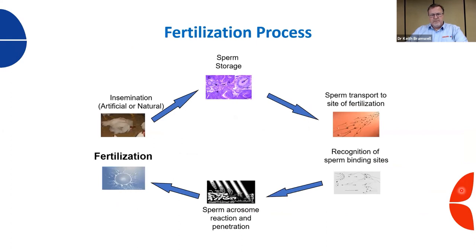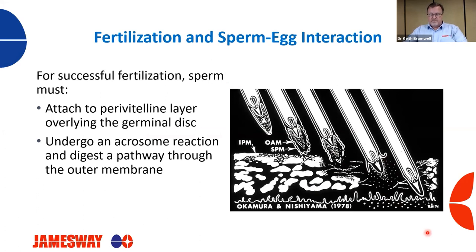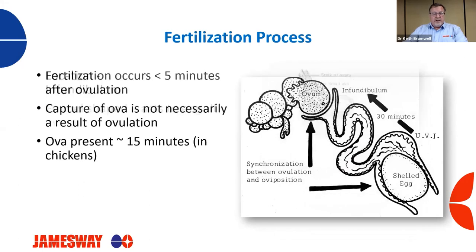Let's look at the hatching eggs themselves and talk about the fertilization process. Fertilization starts with insemination - either artificial or natural - and moves through the hen until we get fertilization. Sperm storage is key. When that sperm comes in contact with the yolk, it undergoes an acrosomal reaction where the sperm actually digests a hole in that membrane to gain access to the genetic material to fertilize it. This occurs in the upper regions of the oviduct in the infundibulum, and within minutes - less than five minutes - we have fertilization.